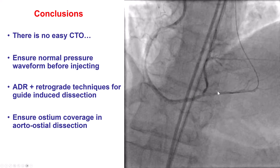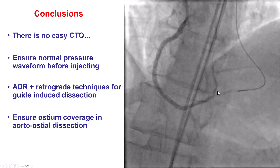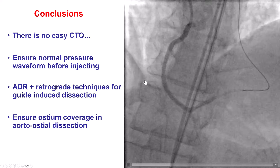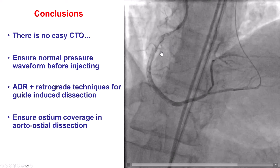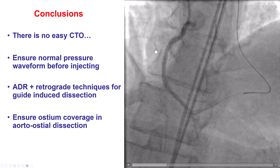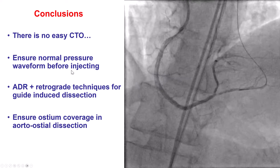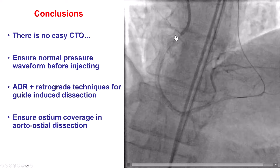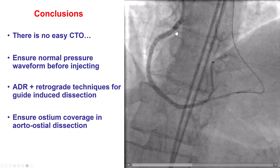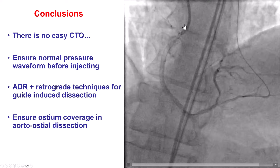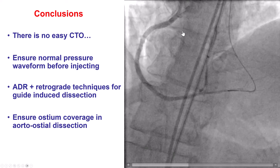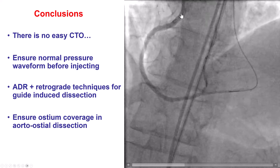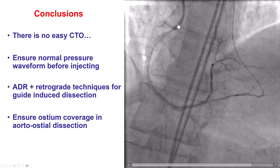Several lessons from this case. First, even cases that appear simple — in this case we thought we had a nice tunnel going through the area of occlusion — can actually turn out to be much more complicated. Second, injections of contrast should always be done very carefully and should not be done if there is dampening of the pressure of the guide catheter. It is critical before every injection to confirm a good waveform and no pressure dampening.